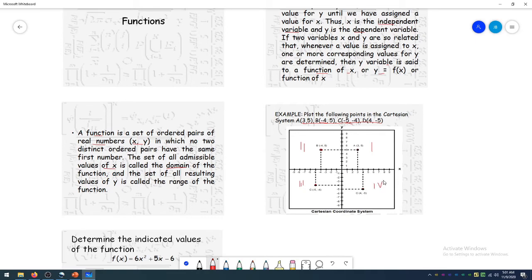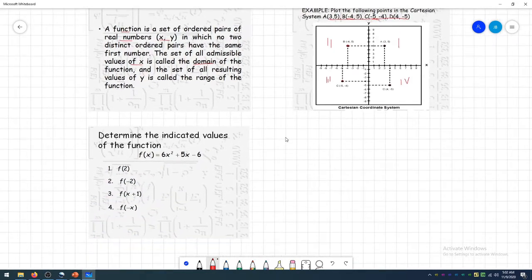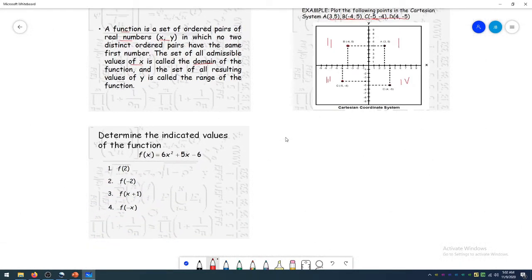Now, for examples of the indicated values. Actually, this is just an example. You need to read and solve more about functions. Determine the indicated values of the function f(x) = 6x² + 5x - 6. There are more operations than examples here. I will just be giving you these examples. So for number 1, let's solve.